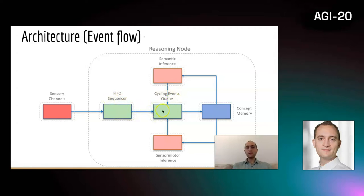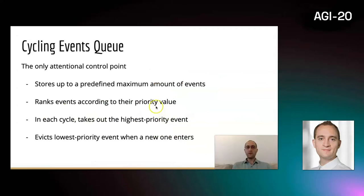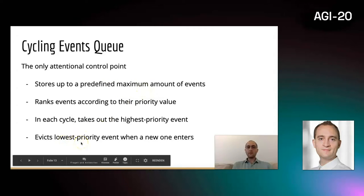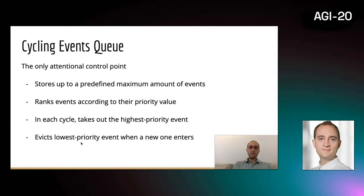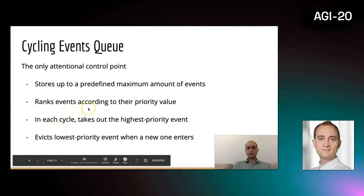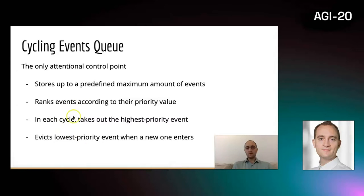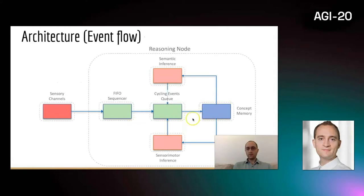This is the global attention buffer of the system where all events meet. It stores up to a predefined maximum amount of events. It maintains capacity by removing the lowest priority item to make place for a new item. The items in it are ranked according to their priority value. In each cycle, the highest priority event is taken out to be passed on to the concept memory block.